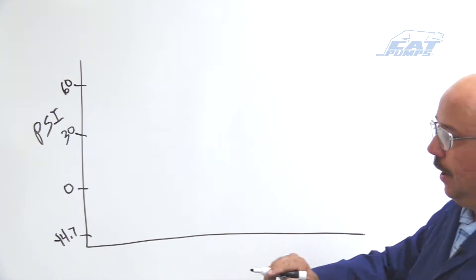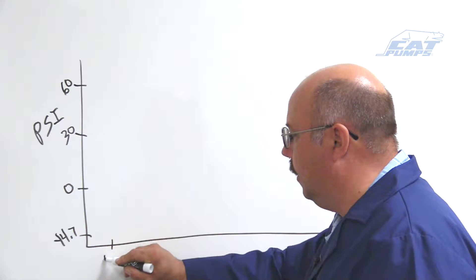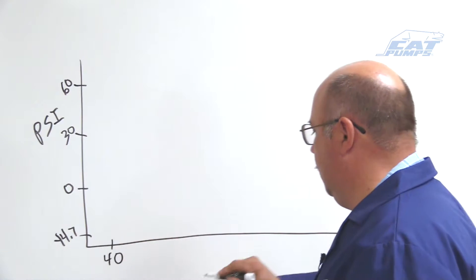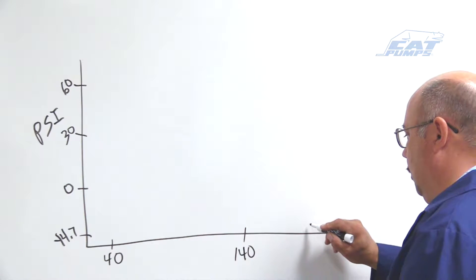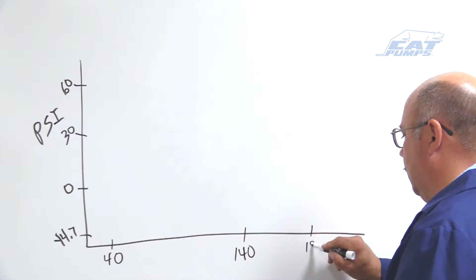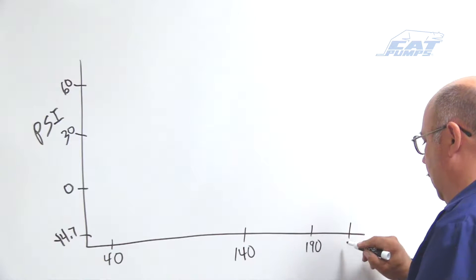And then we're going to start putting some temperature across the bottom. We're going to start at 40 degrees Fahrenheit here. I'm going to put 140 here. Over here we'll put 190 and 212.